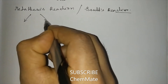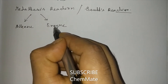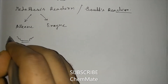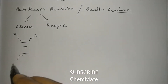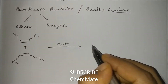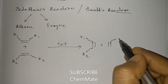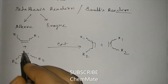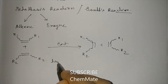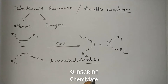Metathesis reactions are of two types: alkene metathesis and enine metathesis. In alkene metathesis, the general reaction involves two alkenes in the presence of a catalyst called Grubbs catalyst. The product involves exchange of alkylidene groups, so this reaction is also known as transalkylidination reaction.